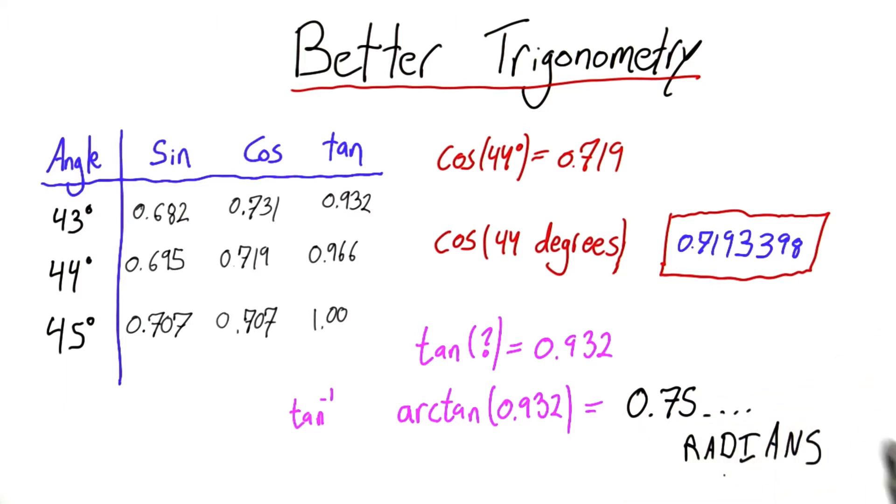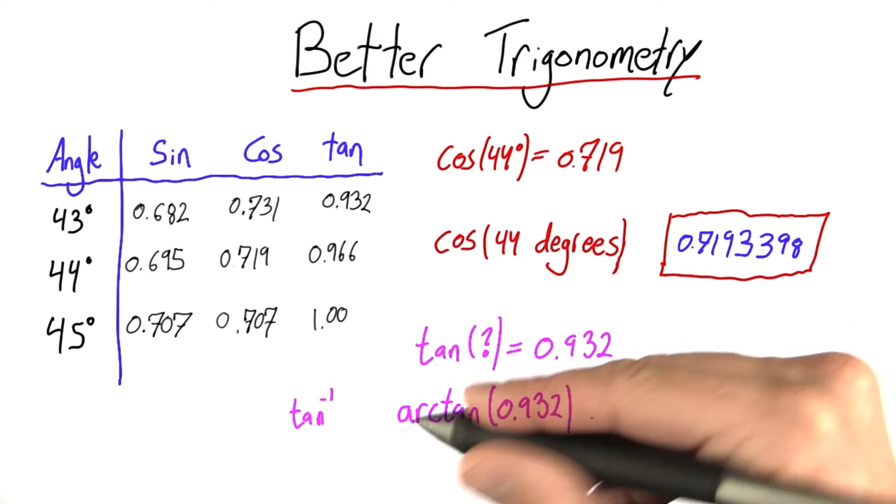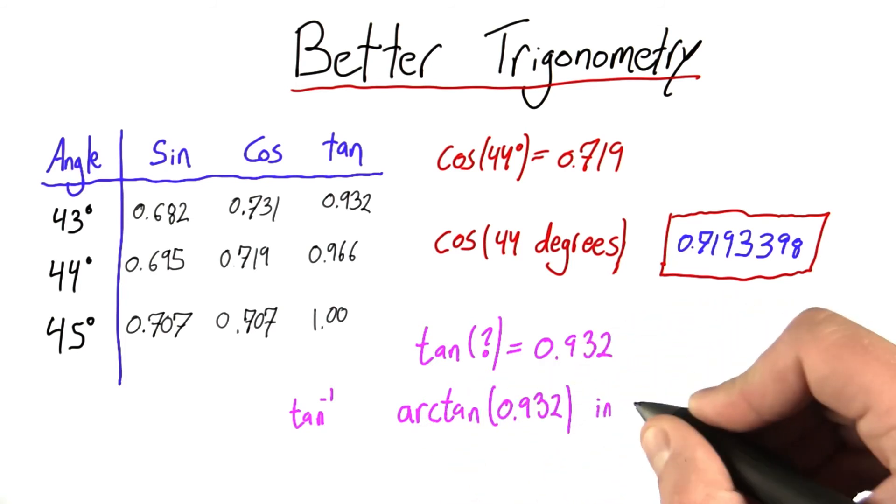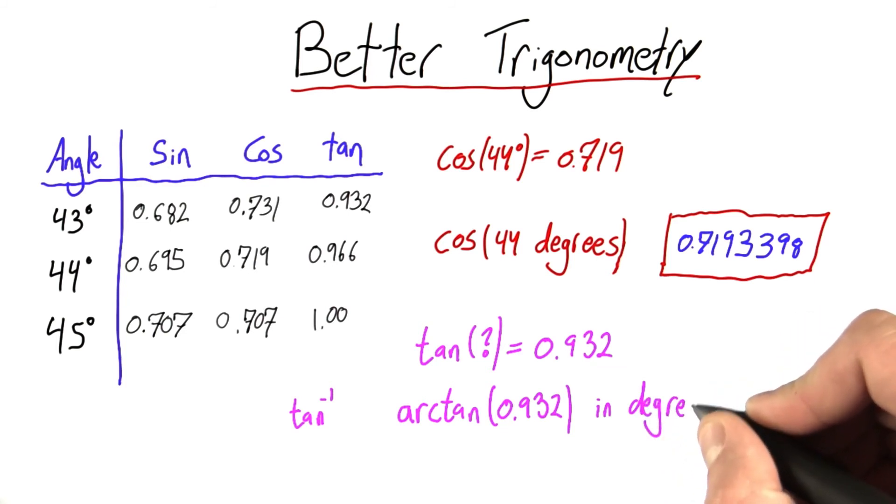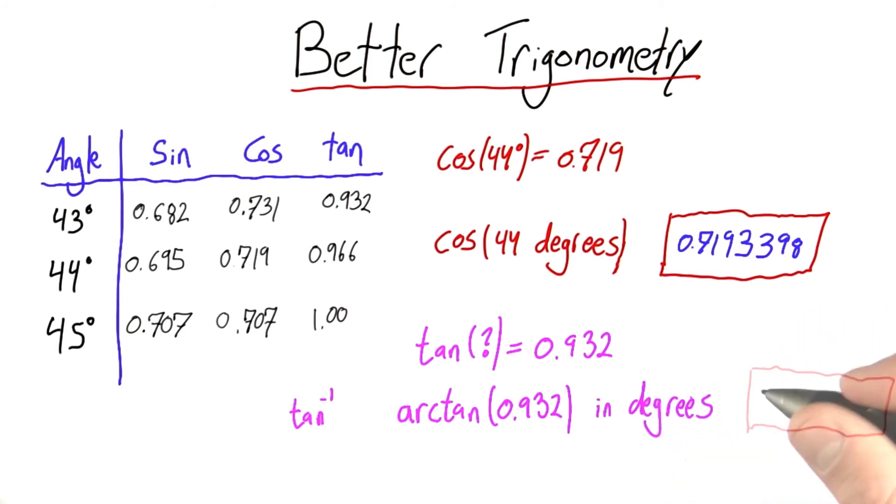So actually, Google will allow you to specify the unit you want. I'd like you to go to Google and type in 'arctan 0.932 in degrees'. This will tell Google that you want the answer in degrees, not radians. And enter the result you get here - just go to two decimal places should be fine.